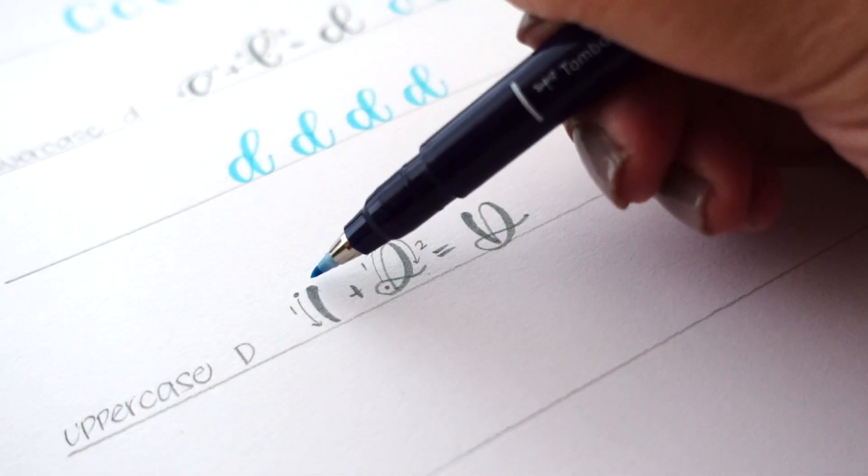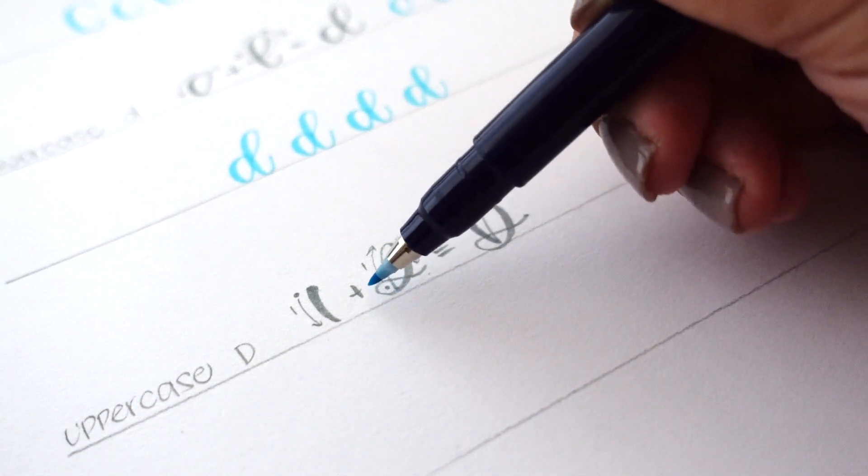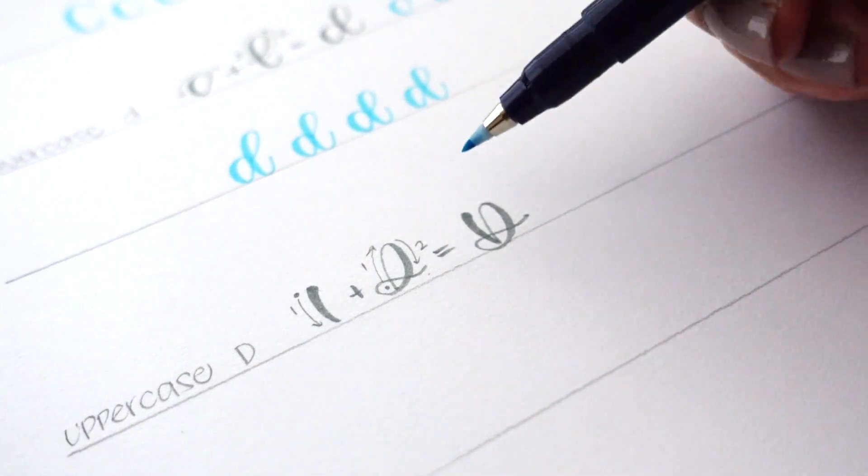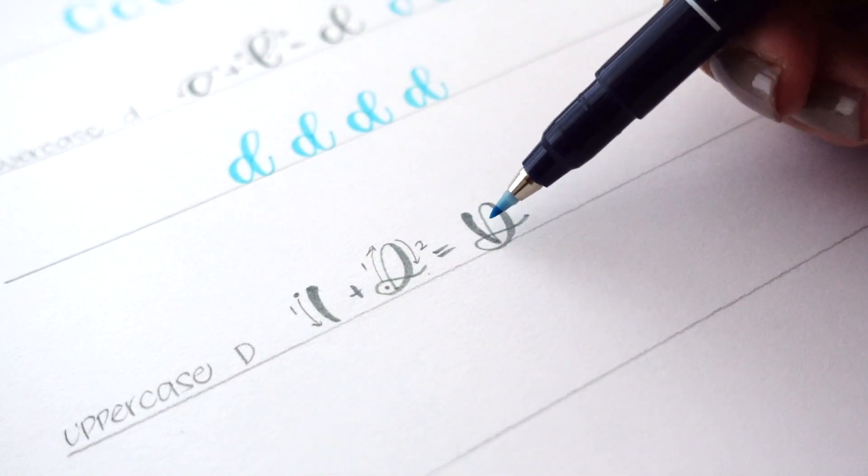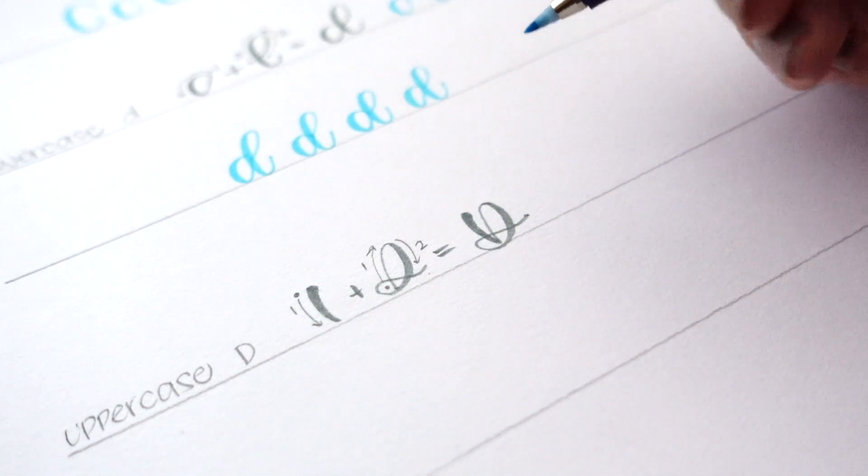My uppercase D starts as a downstroke, then bounces up into an overturn stroke that closes in a fun little loop. The uppercase D is another letter that can be done in several ways, but I feel that this letter form best suits my personal lettering style.